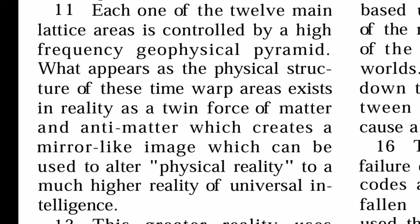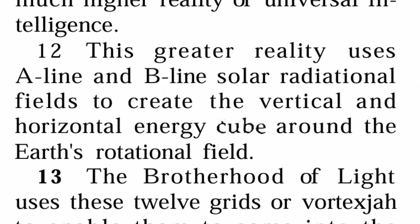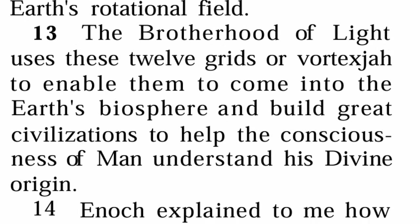We're learning here how and why. Earlier he said it's when we have the alignment of Pleiades. This greater reality uses A-line and B-line solar irradiation fields to create the vertical and horizontal energy cube around the Earth's rotational field. The Brotherhood of Light uses these 12 grids, or vortex jaw, to enable them to come into the Earth's biosphere and build a great civilization to help the consciousness of man understand his divine origin.